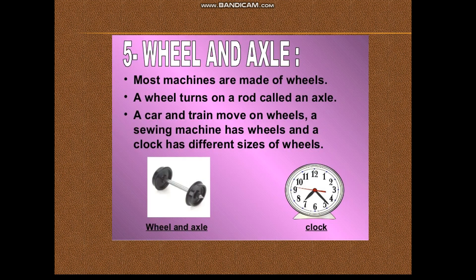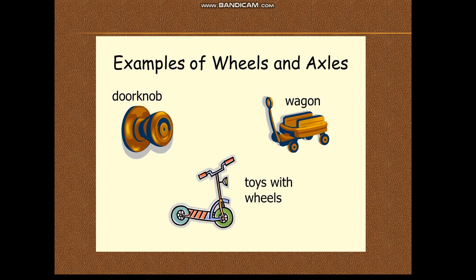The next simple machine is the wheel and axle. Can you think of things that have wheels? Almost all vehicles have wheels, and these wheels have a rod connected to them. The rod is called the axle. The axle moves the wheel, and moving heavy objects becomes easier with the help of a wheel and axle. Door knobs, wagons, toys with wheels, a sewing machine, and a clock are all examples of wheels and axles.